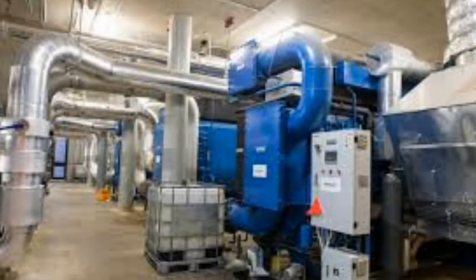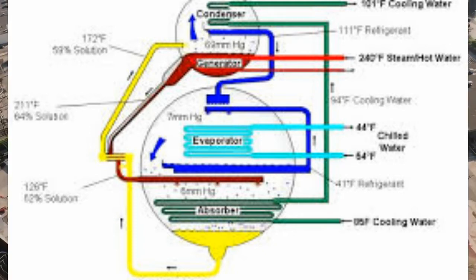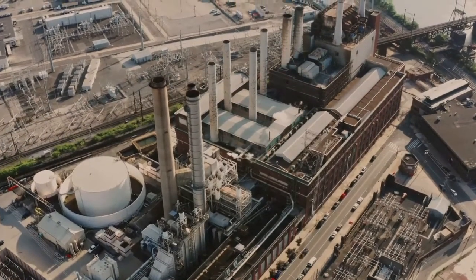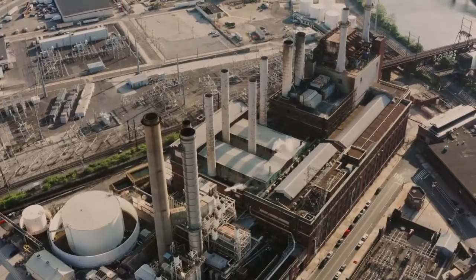The range is sized from 20 to 1500 tons. The Absorption Refrigeration Cycle differs from the Vapor Compression Refrigeration Cycle in that the compressor is replaced by an absorber, pump, and generator, while the condenser, expansion device, and evaporator remain the same.